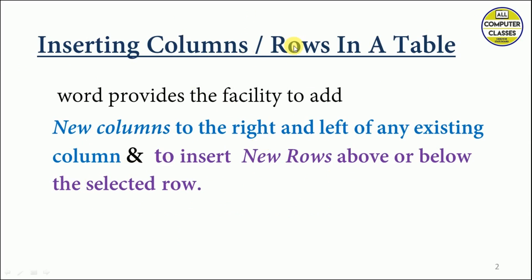The first topic is inserting columns and rows in a table. While working and making entries in a table, we may feel a need to add rows or columns. MS Word provides the facility to add new columns to the right and left of any existing column. Columns are vertical, so they will be added on the right or left side. Rows are horizontal, so new rows will be inserted above or below the selected row.